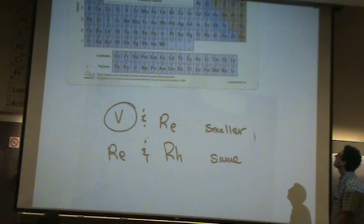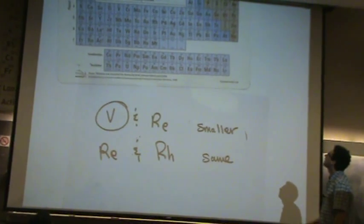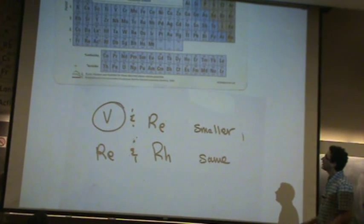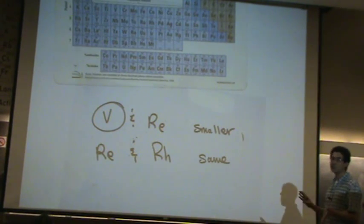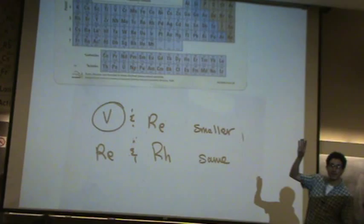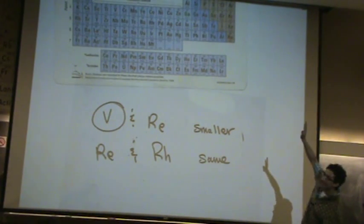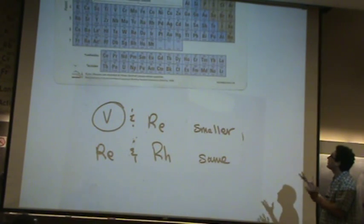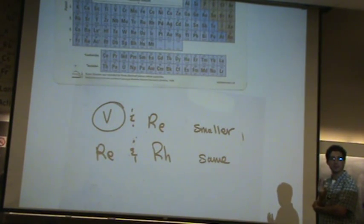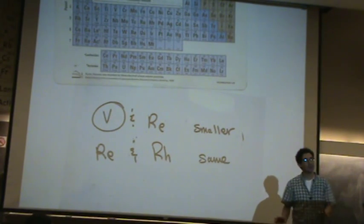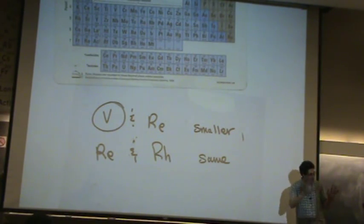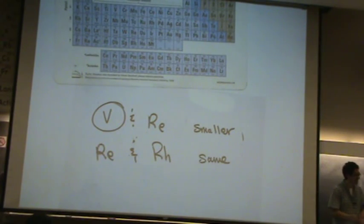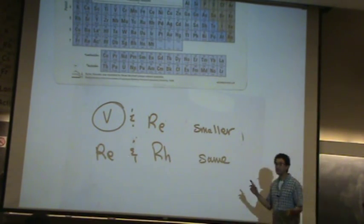Would zirconium and silver be the same size because they're equal distance from each other? Zirconium and silver — not totally, because the U is asymmetric. It does look like a U, but it's kind of a slanted U. You could probably guess that zirconium and silver are about the same size, but I think one's going to be a little bigger. I forgot which way the U is slanted, but I couldn't ask you something like that. They're in the ballpark of each other.